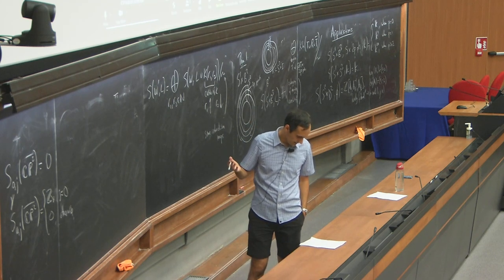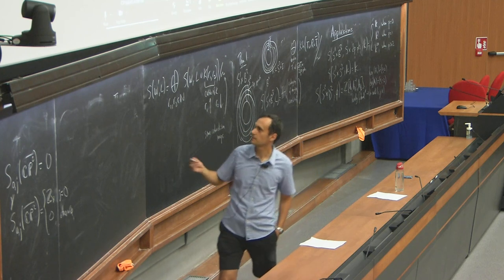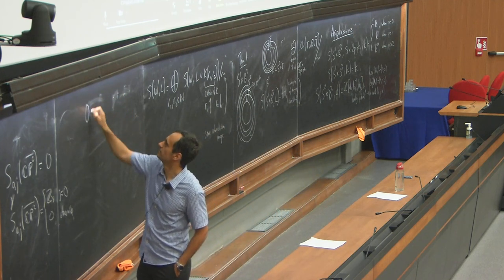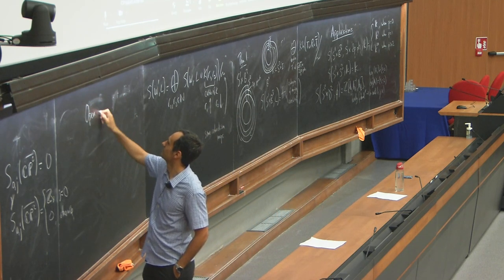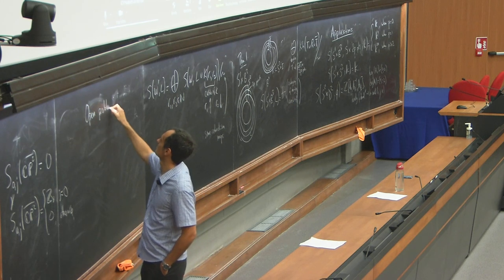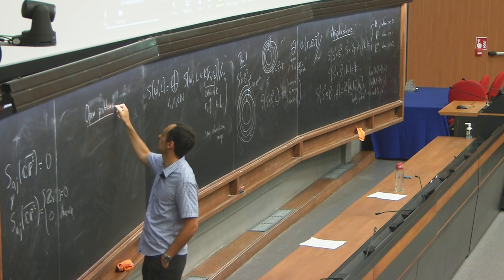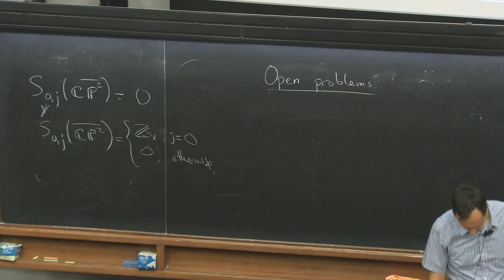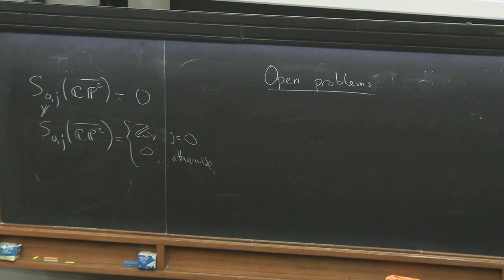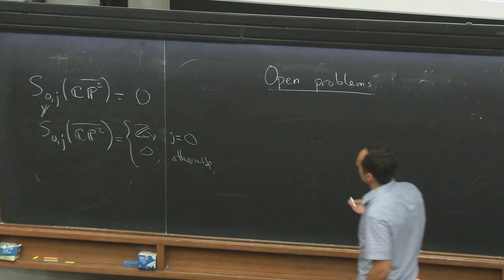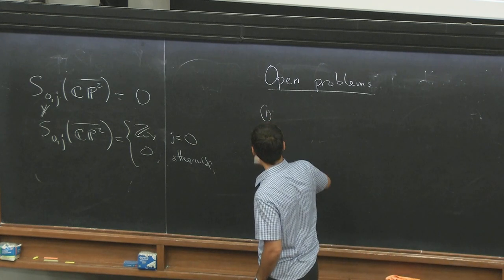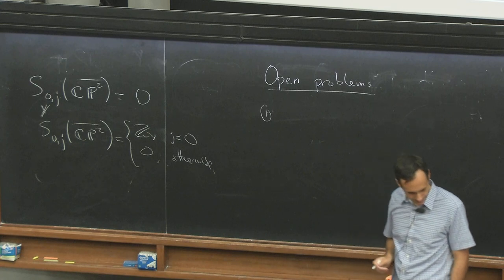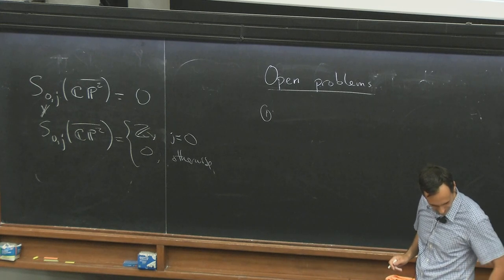All right, so, well, that's the theory, so let me give some open problems. So what, what can we do with this and what should we try to do in the future? Well, okay, so what is it? Well, we don't know, but one thing you can try is to define something similar for knot-Floer homology.